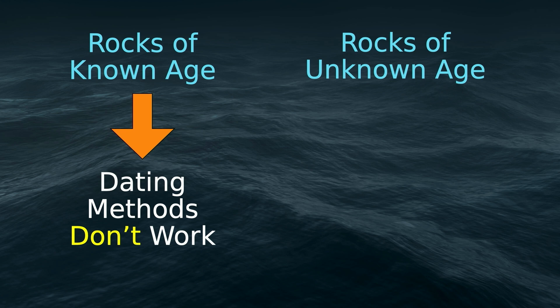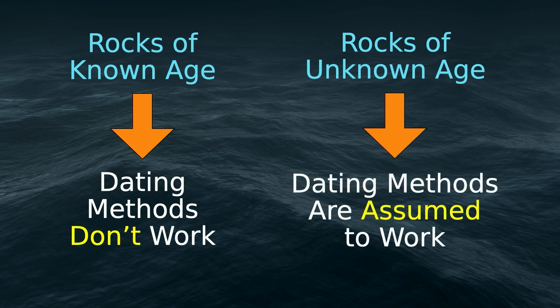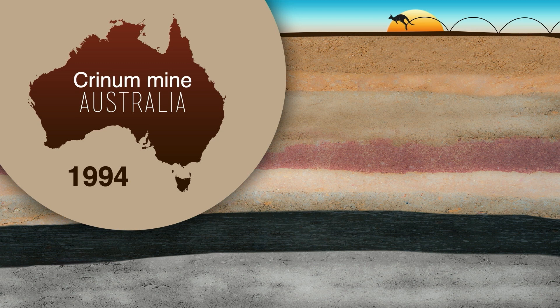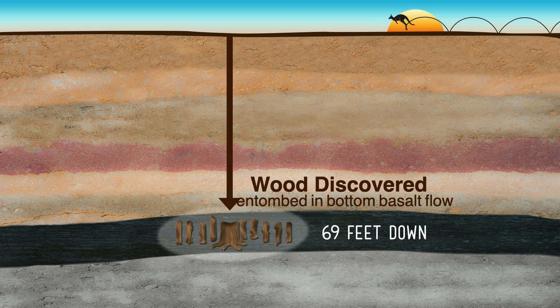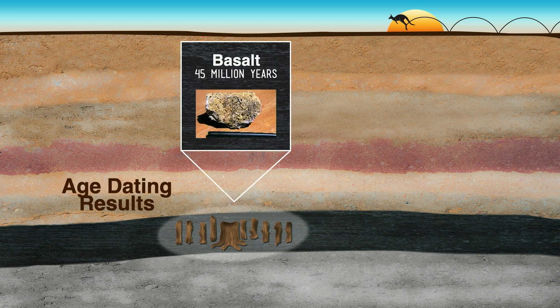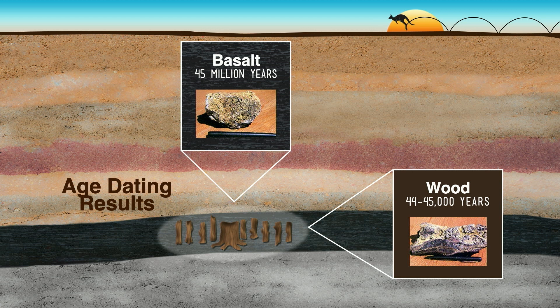Evolutionists want us to take rocks of unknown age — where no human eyewitness saw the lava come out of the ground — and assume the methods work. But if they don't work on rocks we know the age of, why should we trust them on rocks we don't know the age of? In a mine in Australia, they dug down through sands and clays and found wood entombed 60 feet down in molten lava. The basalt was dated to 45 million years old by conventional dating, but the wood by carbon dating was only 44,000 to 45,000 years old. Something is clearly wrong with the dating methods.